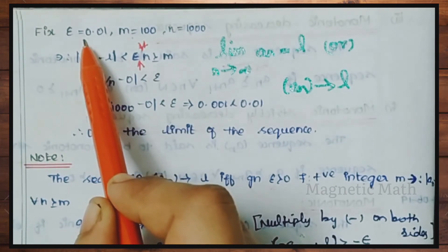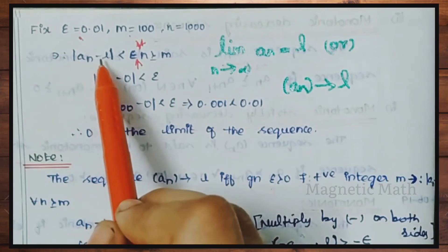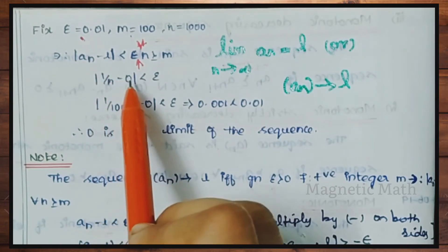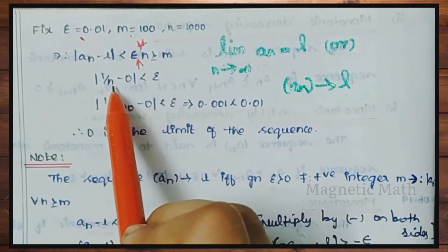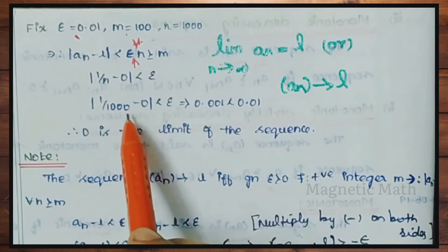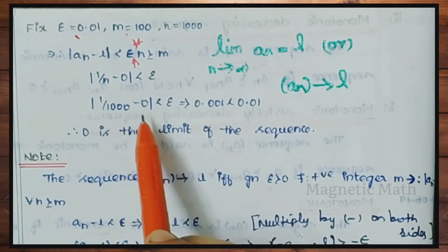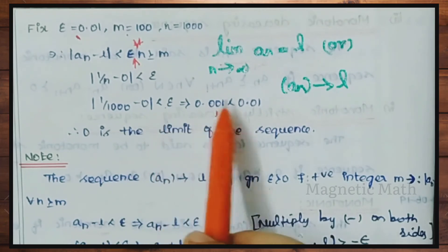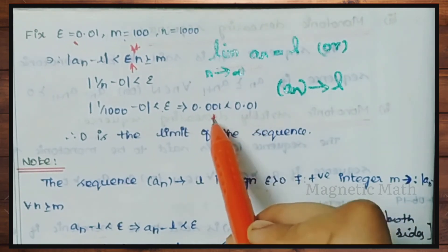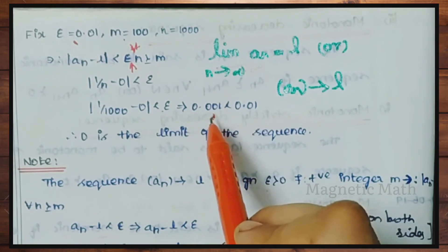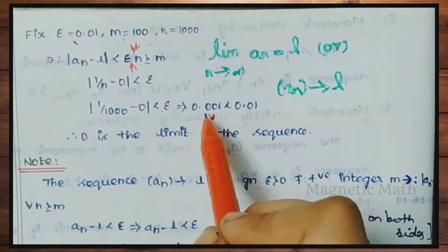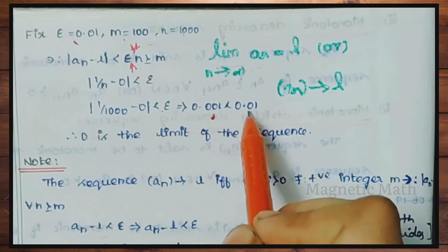Epsilon is the least positive value. We have the convergent sequence definition: modulus of an minus L is less than epsilon for n greater than or equal to m. Here an is the sequence 1 by n, and the limit L is the value it converges to, which is 0. So 1 by n at n equals 1000 gives 0.001 minus 0, which equals 0.001, and this is less than epsilon. So n equal to 1000 satisfies the condition. This is the limit of the sequence.